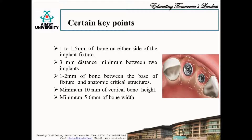Options for dental implant imaging range from standard projections commonly used in dental offices to more complex radiographic techniques used in radiology centers, both two-dimensional and three-dimensional. The following are the requirements for successful implant placement and osseointegration: 1 to 1.5 mm of bone on either side of the implant fixture, 3 mm of distance between two implants, 1 to 2 mm of bone between the base of the fixture and the critical anatomical structure, a vertical bone height of minimum 10 mm, and a width of 5 to 6 mm.